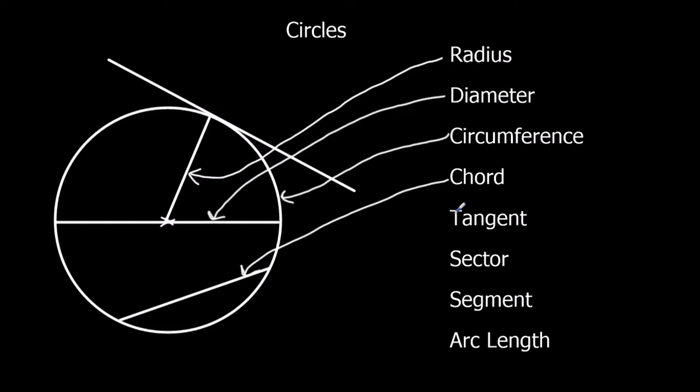The tangent, that is a line that touches the edge of the circle. It doesn't go into the circle, it doesn't miss the circle. It just touches. So this line here that's just touching the edge of the circle and then carrying on, that's called a tangent.